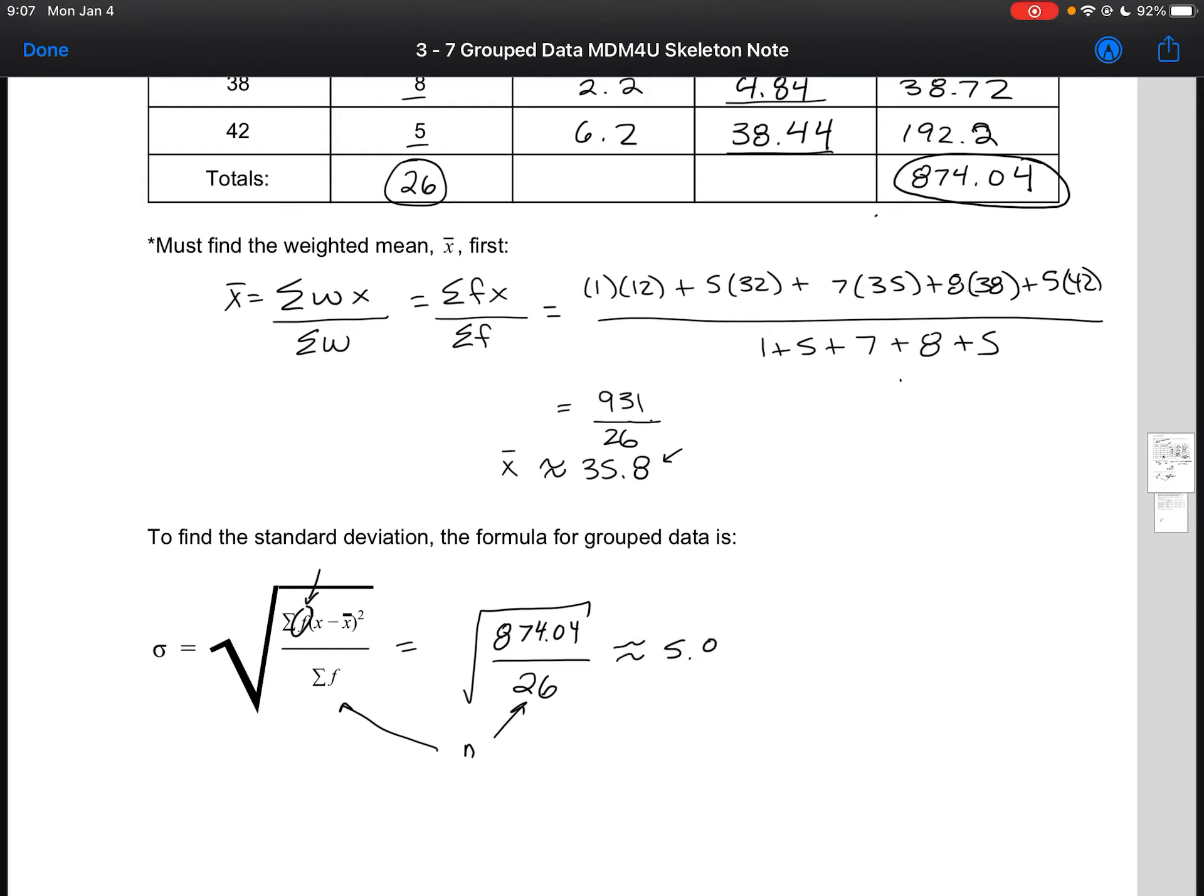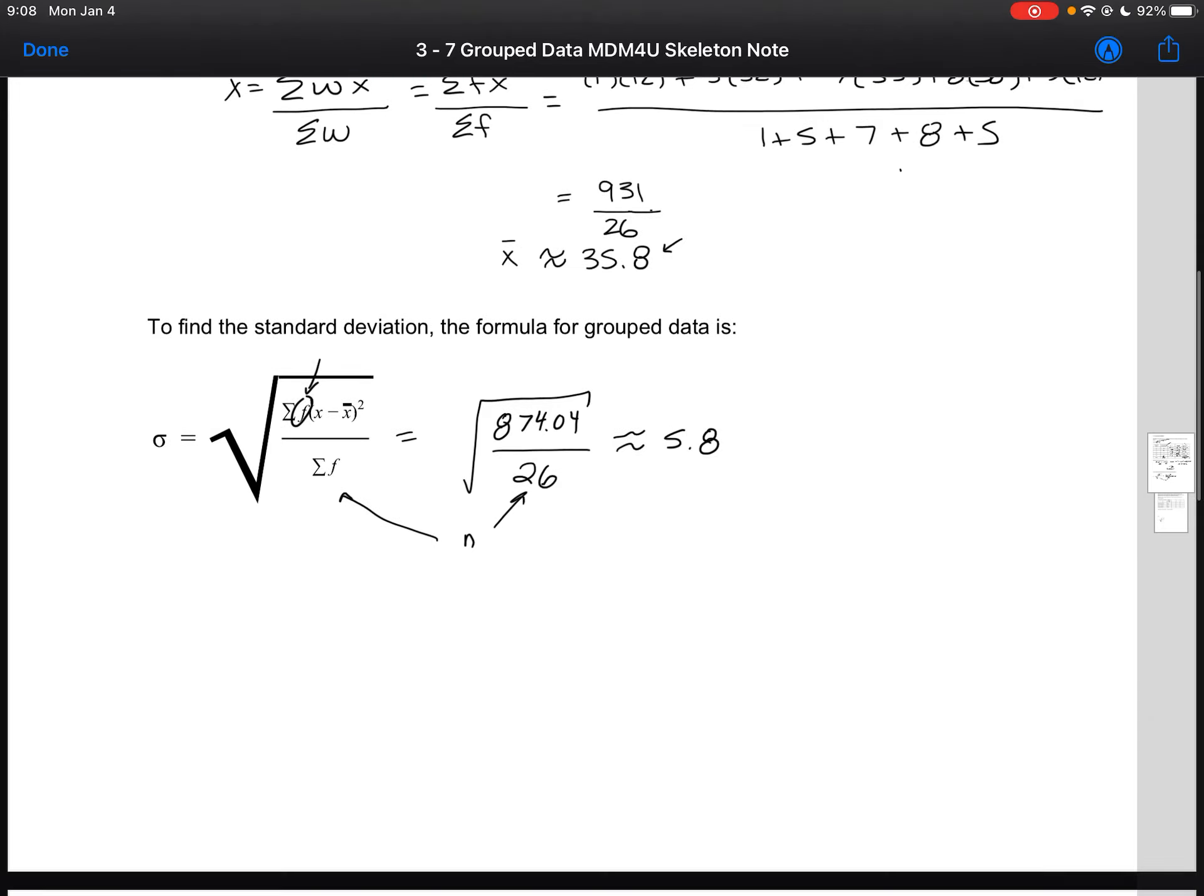Dividing and square rooting gives us that our standard deviation is approximately 5.8. So that means that most of the data is collected within 5.8 standard deviations of the mean.